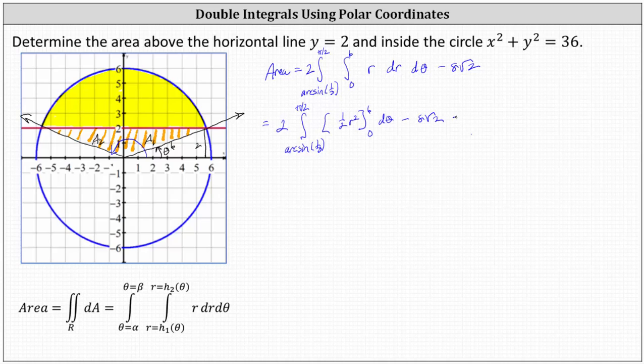Giving us two times the integral from arc sine one third to pi divided by two of 18 d theta. And don't forget about the minus eight square root two.